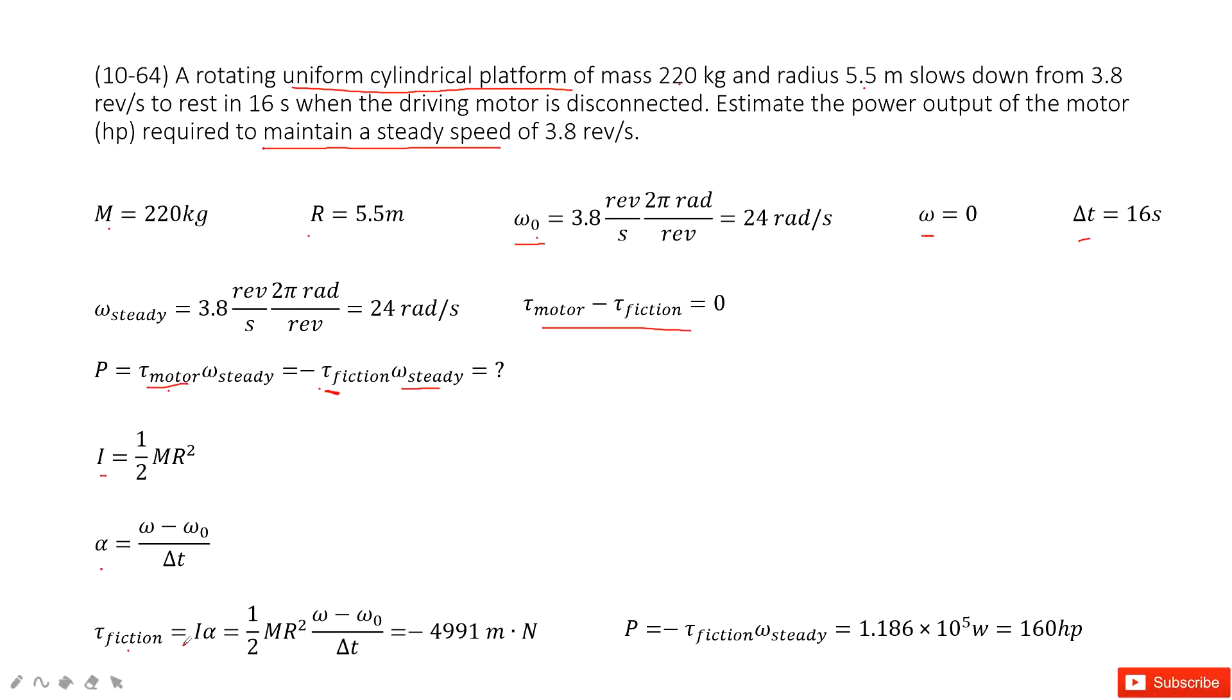After we get the I times alpha, we get the torque for friction. And then, this negative of the friction is just the torque of motor. So we input this quantity inside this function. We get the final answer there.